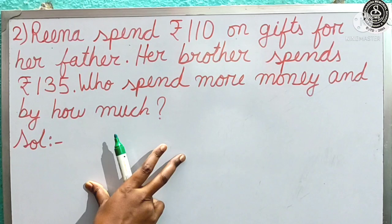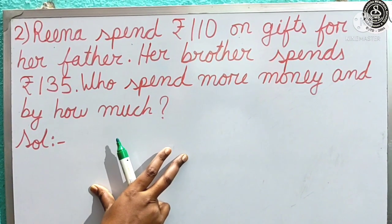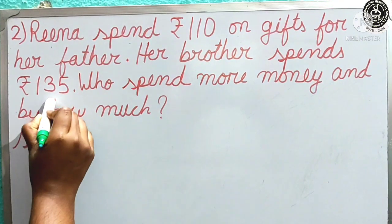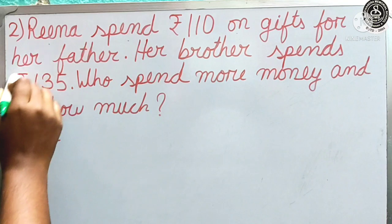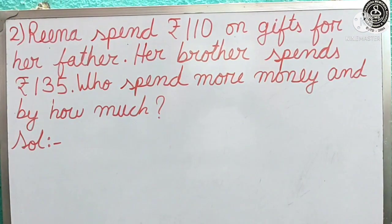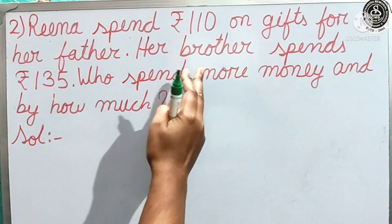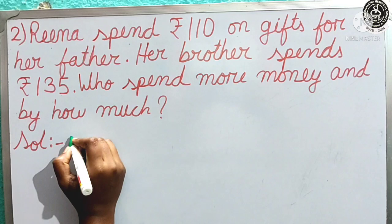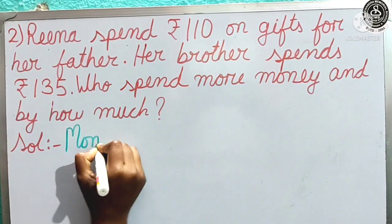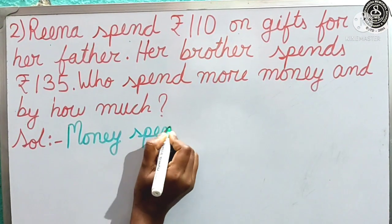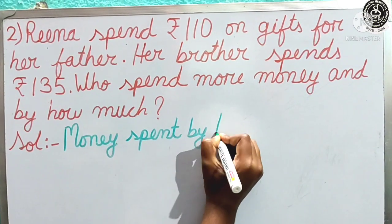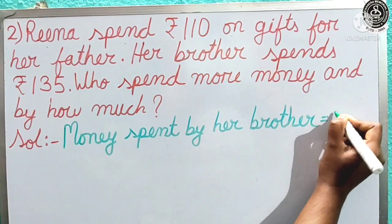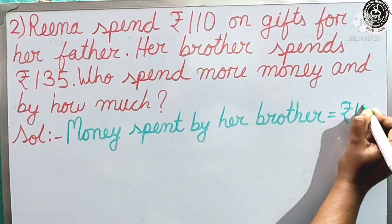We will do subtraction to find who spent more money. For subtraction, we always keep the bigger number first. Is 110 bigger or 135 bigger? 135 is bigger, so we keep it first and then keep 110 in the second place. 135 rupees was spent by her brother, so we write: money spent by her brother equal to — don't forget the rupee sign, children — 135.